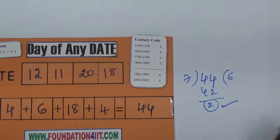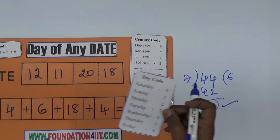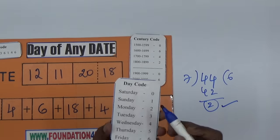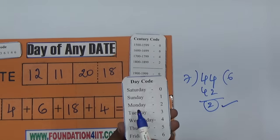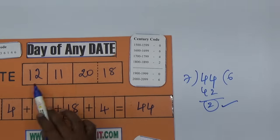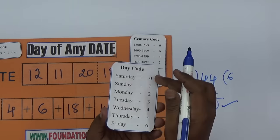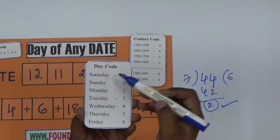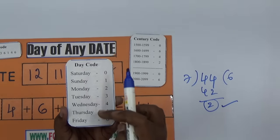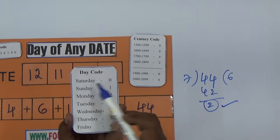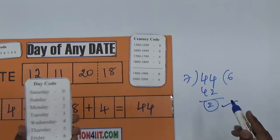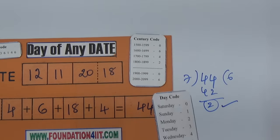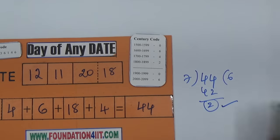According to this, we can see the date using the day code. We got 2. You see here, 2 is Monday. That means November 12, 2018 is Monday. This day code is very easy: Saturday is 0, Sunday is 1, Monday is 2, Tuesday, Wednesday, Thursday, Friday. Just remember this - according to the remainder you can say whichever date it is.